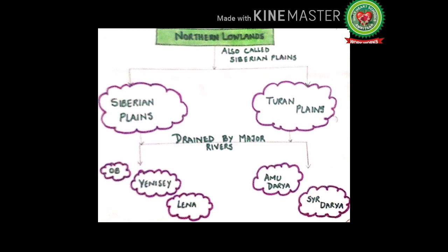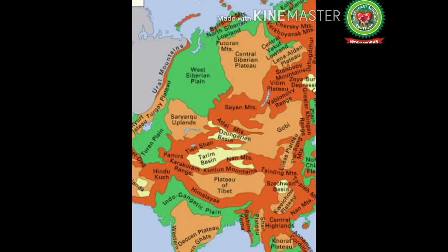Let's understand the mind map of the northern lowlands. The northern lowlands extend from the Ural Mountains to the Bering Sea. The two important parts are the Siberian Plains and the Turan Plains. The Siberian Plains is known for its sub-arctic conditions with harsh cold, while the Turan Plains has a desert climate with rare vegetation and short grasses. The Siberian Plains are drained by the Ob, Yenisei, and Lena rivers, while the Turan Plains are drained by the Amu Darya and Syr Darya. Students, practice all the points, fill the map, and revise all points from your book. Have a good day!